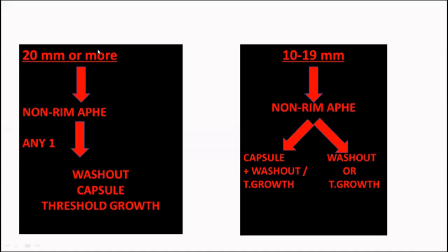For a lesion 2 cm or more with non-rim arterial phase hyperenhancement and any one feature — washout, capsule, or threshold growth — it is a definite LR-5 HCC. For lesions between 10 to 19 mm with non-rim arterial phase hyperenhancement, we need washout or threshold growth to diagnose HCC. The capsule alone is not sufficient for the 10-19 mm category; washout or threshold growth is also required.